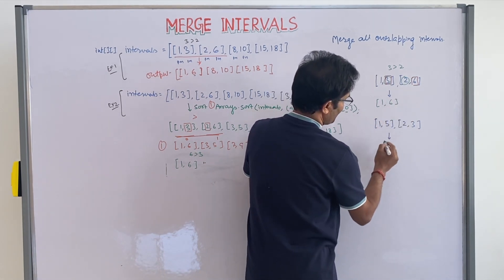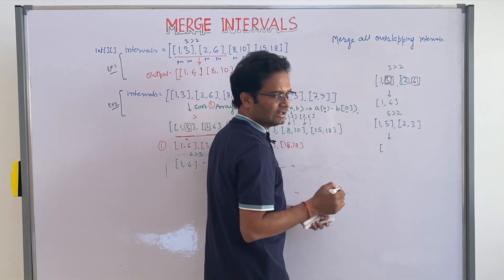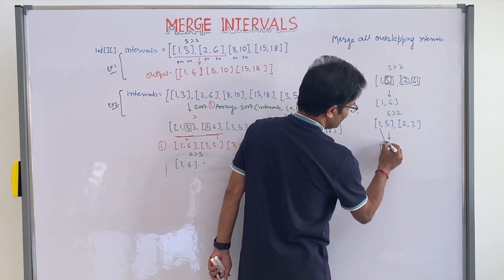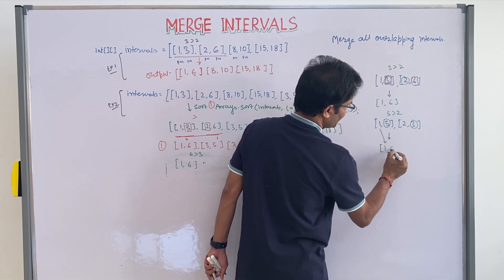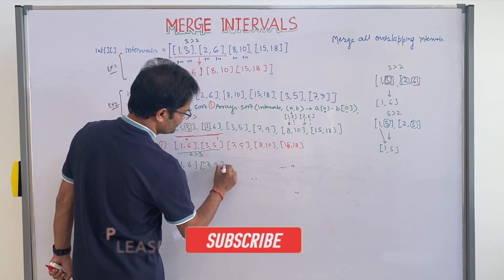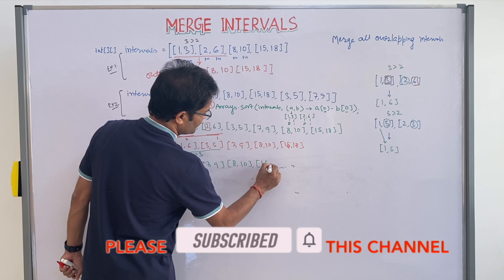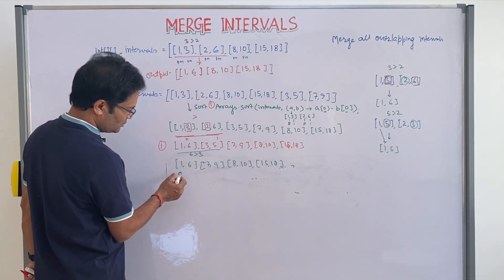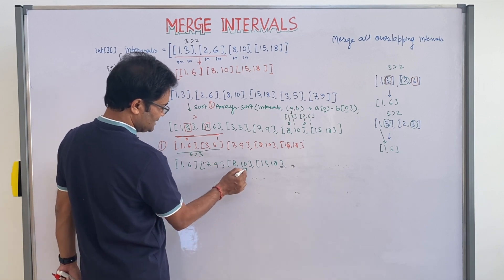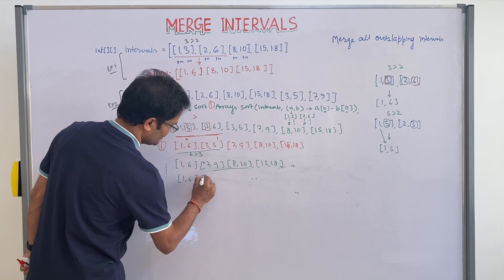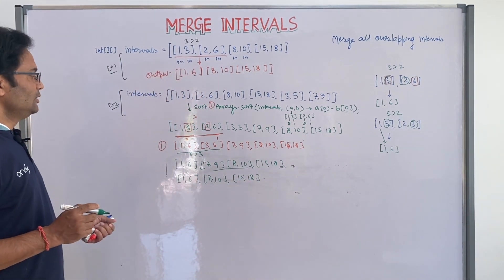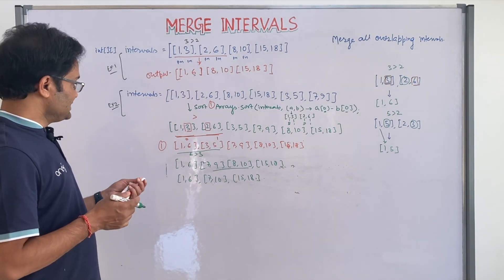After getting the merged 1,6, go to 7,9 and 8,10 and 15,18. Now compare: 6 is not greater than 7, so no merge. Then 9 compared with 8 — 9 is greater than 8, so this can be merged. So the answer becomes 1,6 then 7,9 and 8,10 merge to give 7,10, and then 15,18. That is your final output. So this was the logic and algorithm — let me show how you can design the solution for this problem.